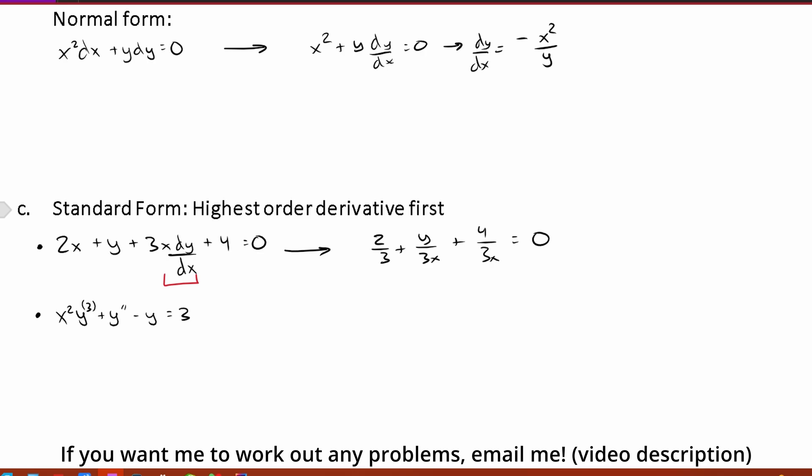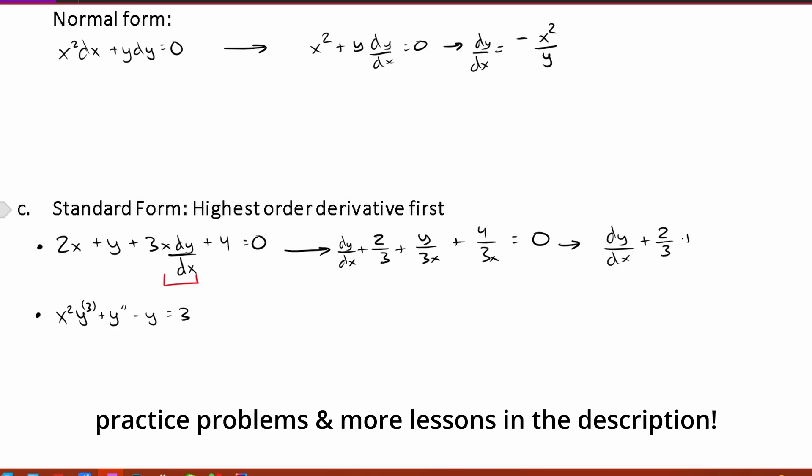So this is what we're going to look like. If we want to make it a little bit simpler we can combine some things. So dy over dx plus 2 over 3 plus y plus 4 over 3x is equal to 0 but that's just simplifying. You get the point.